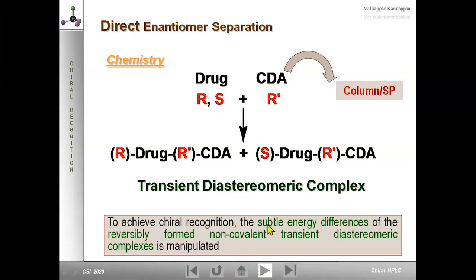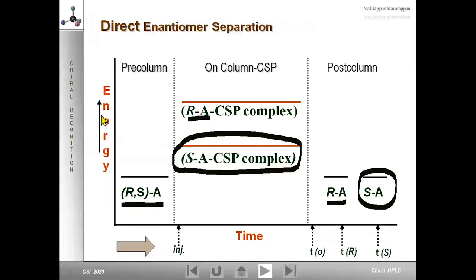Immobilized columns include Chiralpak IA — amylose — and Chiralpak IB — cellulose. Example separations include hexobarbital, lorazepam, naproxen, and propranolol. Recently, Daicel introduced a new U-series: the first sub-2 micron immobilized chiral columns — particle size less than 2 microns, 30 mm length, 1.5–50 mm ID — named Chiralpak I-U series. These are designed to be used with ultra-high-performance liquid chromatographic systems to achieve ultra-fast and high-resolution enantioseparations.